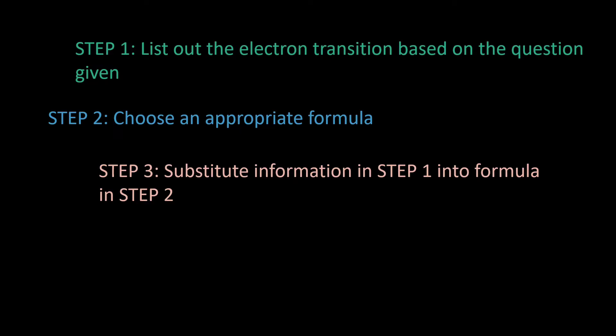I will now discuss the calculations corresponding to electron transitions. There are three steps to follow. Step one: list out the electron transitions based on what is given in the question. Step two: choose an appropriate formula. Step three: substitute the information from step one into the formula from step two to get the final answer.